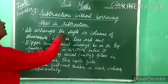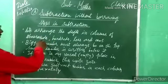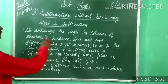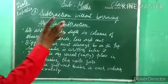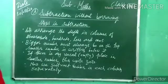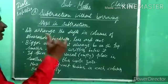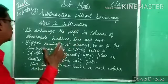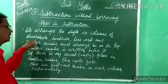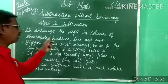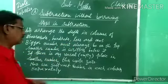Column wise hum arrange karna hai. For a 4-digit number, columns go up to 1000; for a 5-digit number, columns go up to 10,000. So we arrange digits in columns: 1s, 10s, 100, 1000, and 10,000.